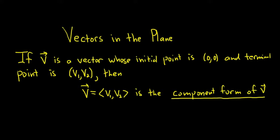And these guys here, v1 and v2, these are called the components. You can think of the first one as x and the second one as y. We're just being a little bit more general here when we call them v1 and v2.